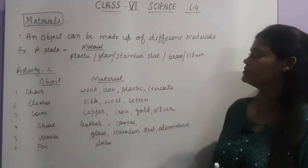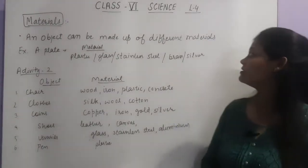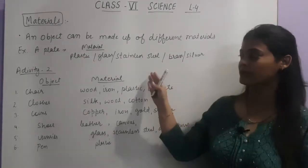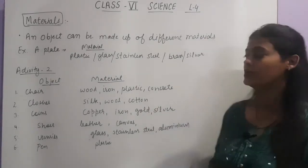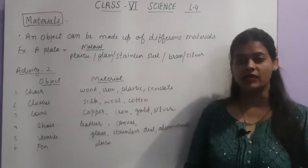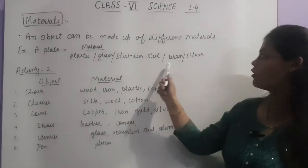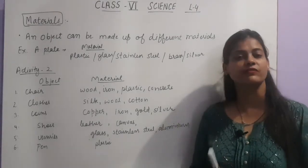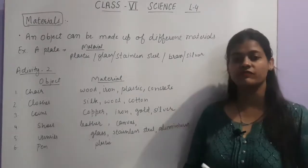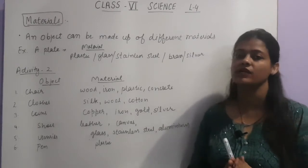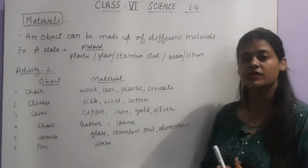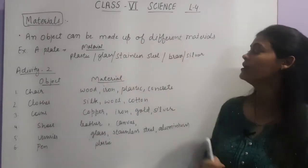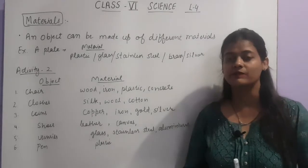So let's see the first one — an object can be made up of different materials. For example, let us take a simple example like a plate that you use at home. It can be either made up of plastic, glass, stainless steel, brass, or silver. It means the same object can be made up of different materials — it is not specific that a particular object is always made up of a specific material. So this example proves that the same object can be made up of different materials.